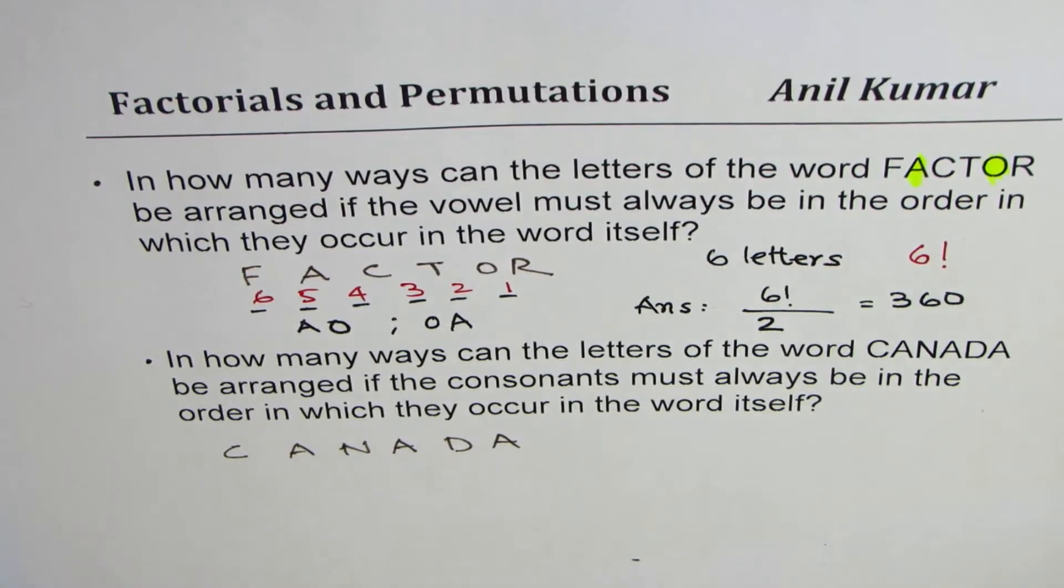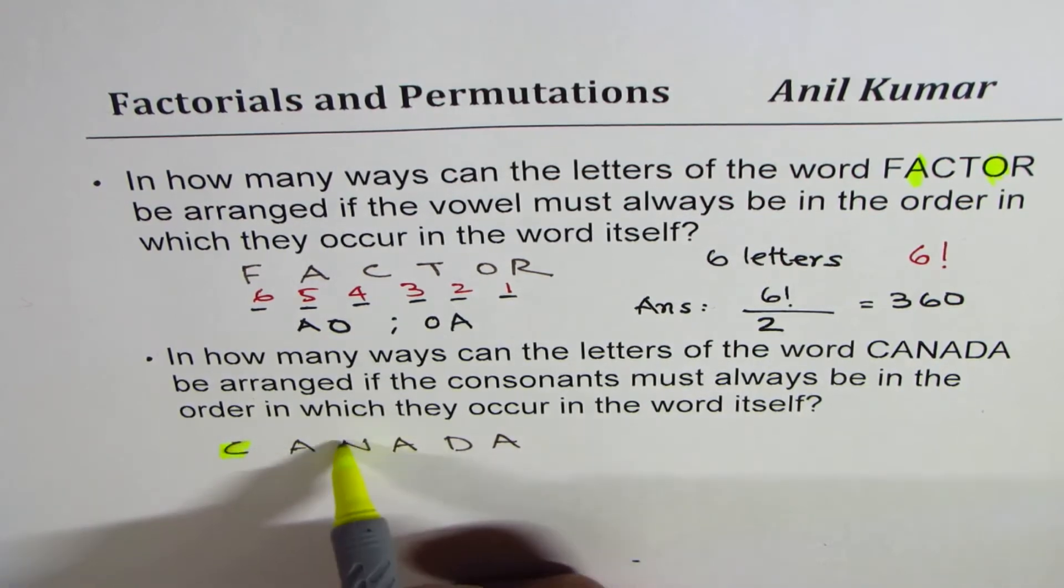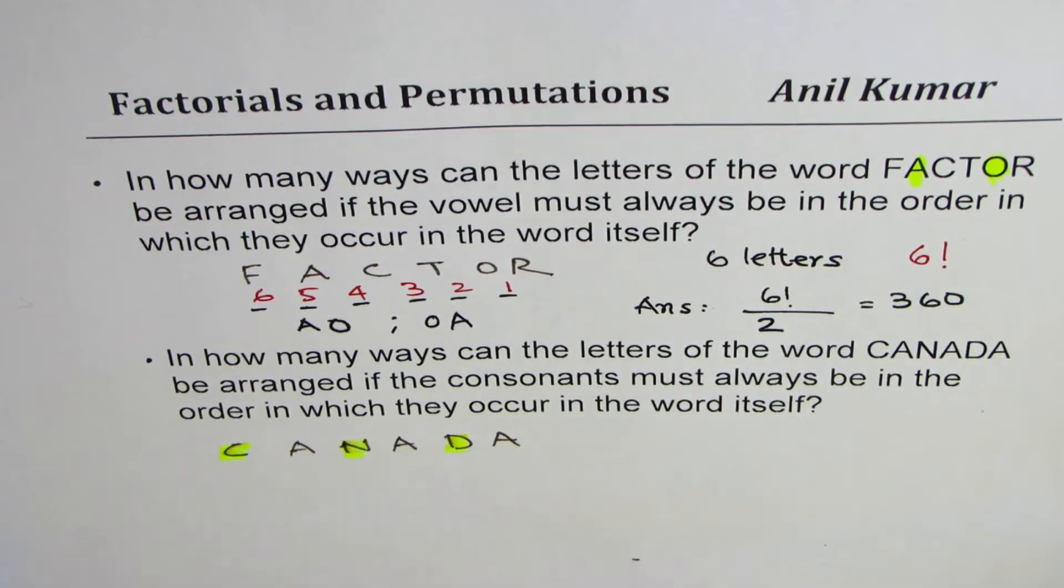And when we are talking about consonants, vowels are A's, consonants are C, N, and D.